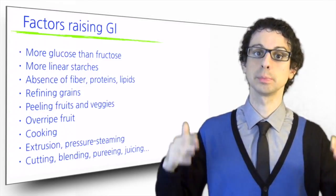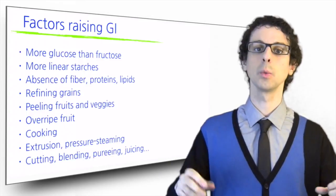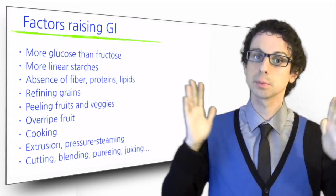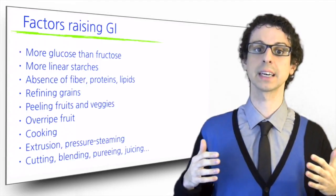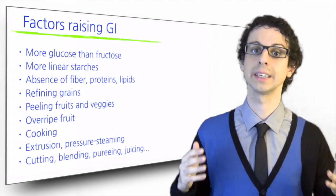And then of course, peeling fruits and veggies always raises the GI because you remove a lot of fiber. Whenever we cut, blend, puree, or in any way turn the food into smaller pieces, the work of digestive enzymes is easier and glucose absorption is faster, so the GI increases.